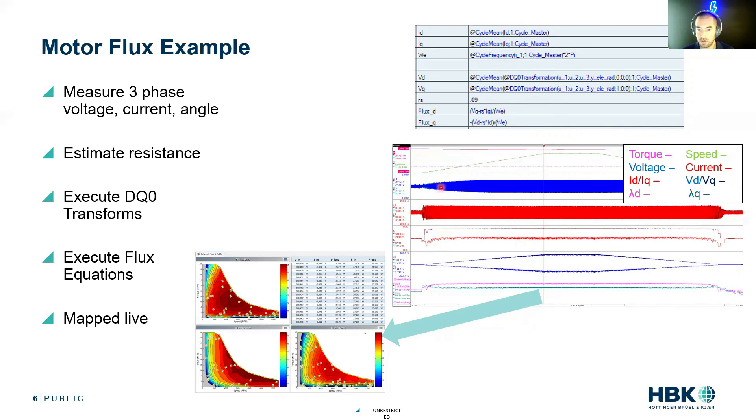We can view all of those as a scope trace. So we got our torque and speed as a scope trace. We see our voltages and currents. Then we have our Q axis currents.